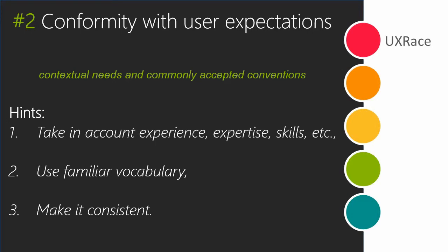The second principle: conformity with user expectations. A dialogue should correspond to the contextual needs of the user and commonly accepted conventions. For instance, the user's experience, expertise, and skills should be taken into account. The dialogue should be consistent, and if for some reason it is going to violate user expectations, it should first inform the user. But what if you are inventing the future and just cannot conform with anything? Then double-check that your product is at least self-descriptive and easy to learn.